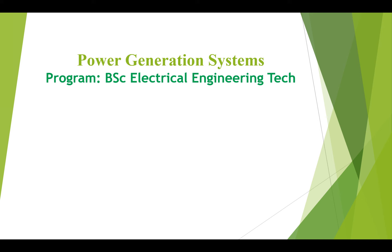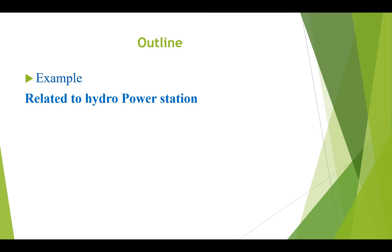Hello and welcome to the course of power generation systems. Today we are going to see some examples related to hydropower stations. In our previous lectures we studied about the hydropower station, its advantages and disadvantages, and its constituents — different hydraulic structures, electrical equipment, and turbines. So today we will see some examples related to hydropower stations.